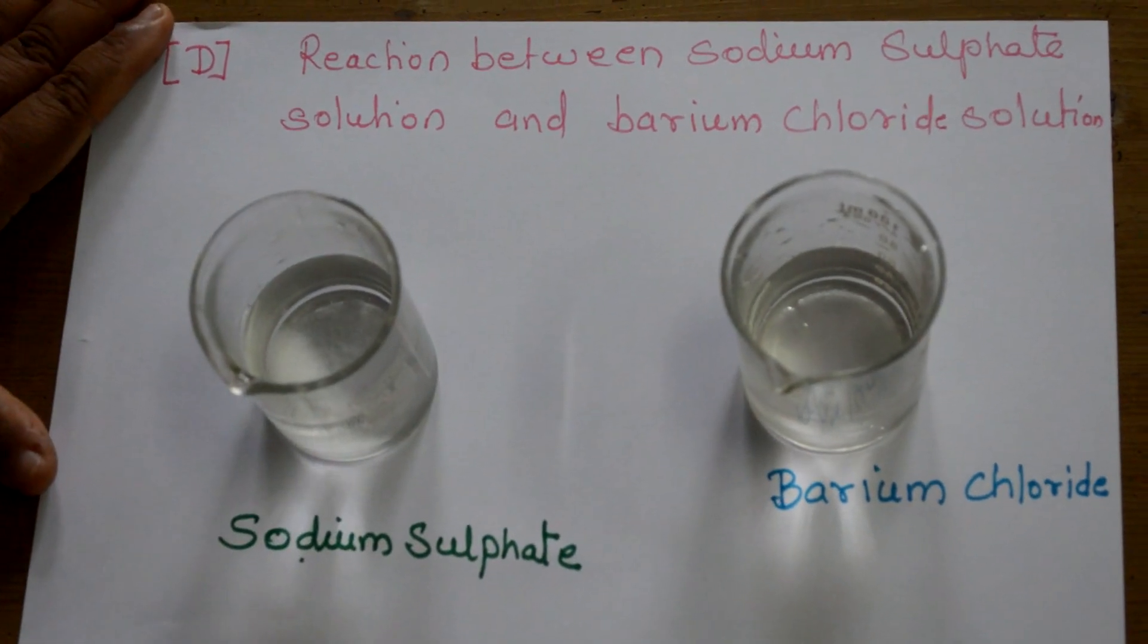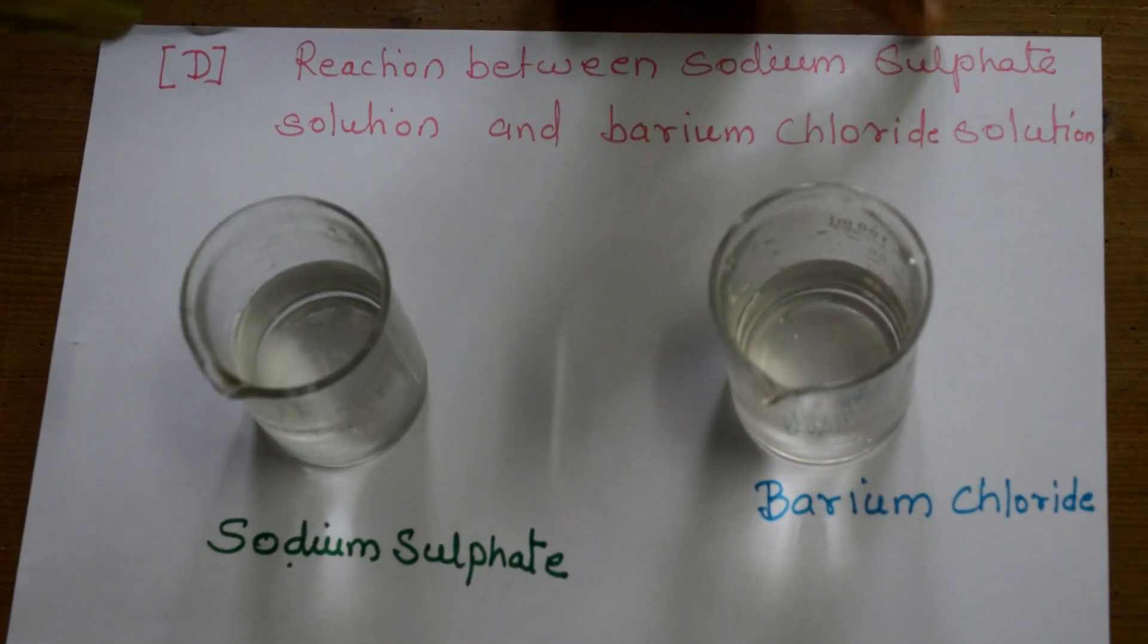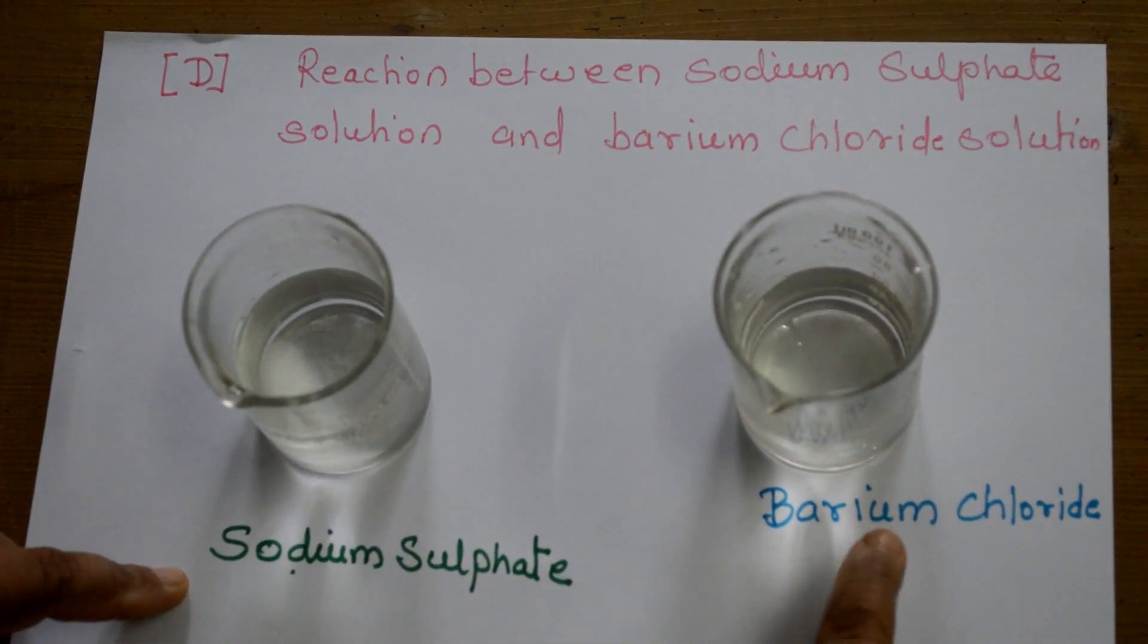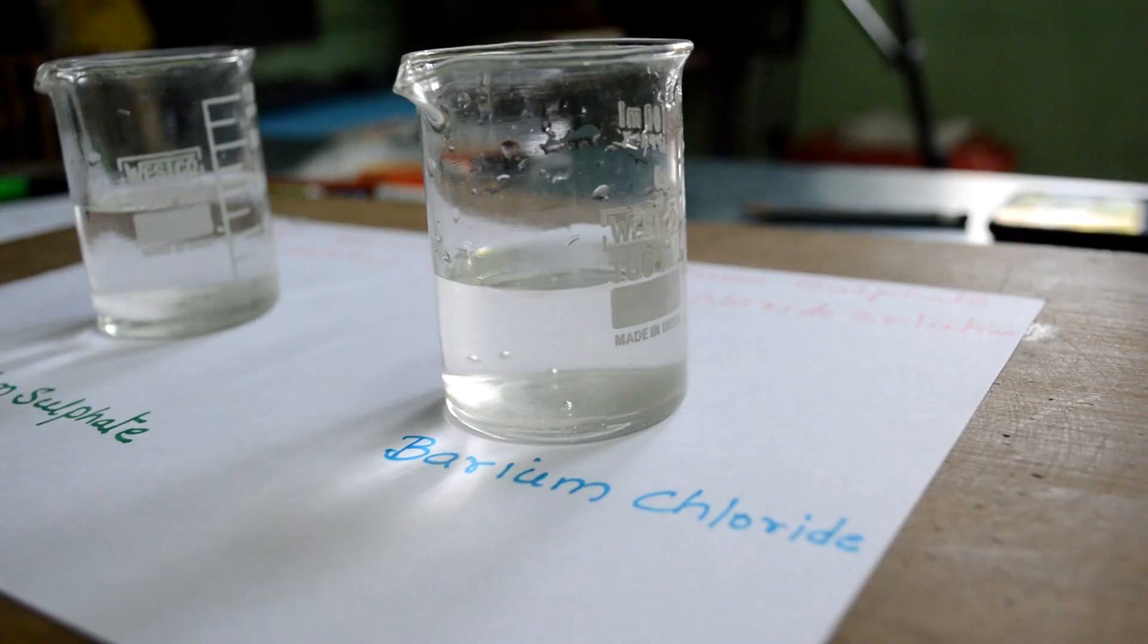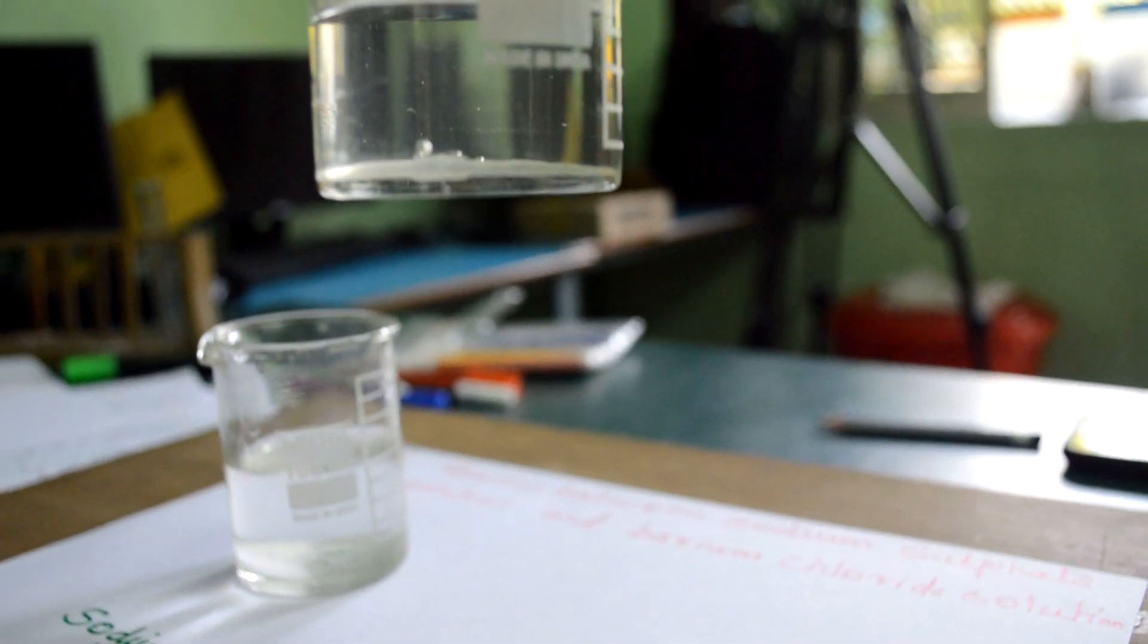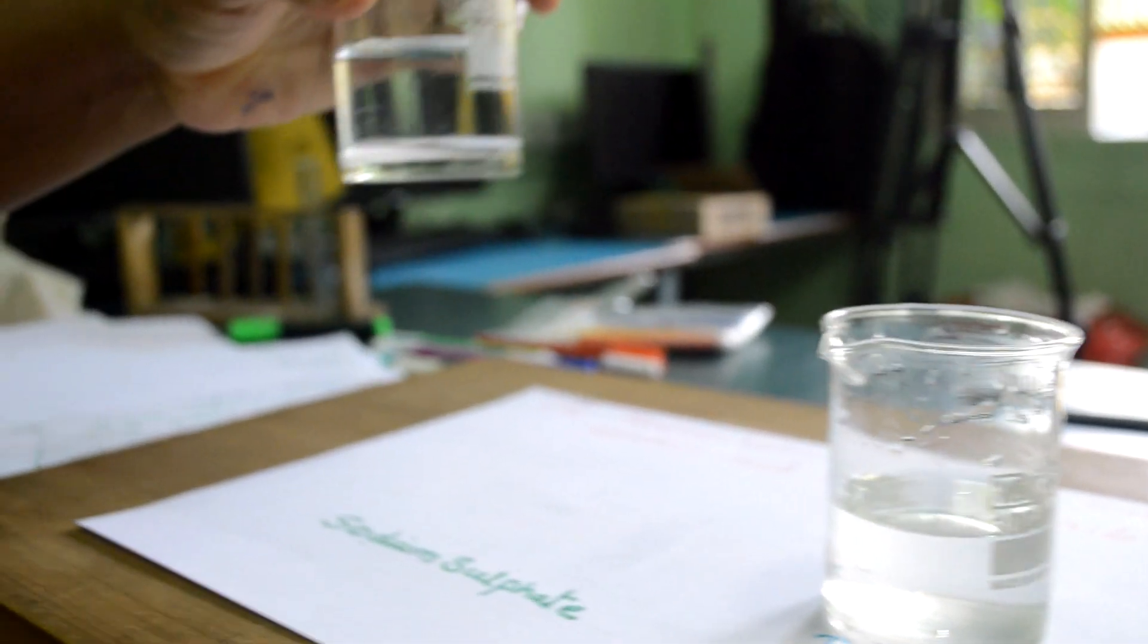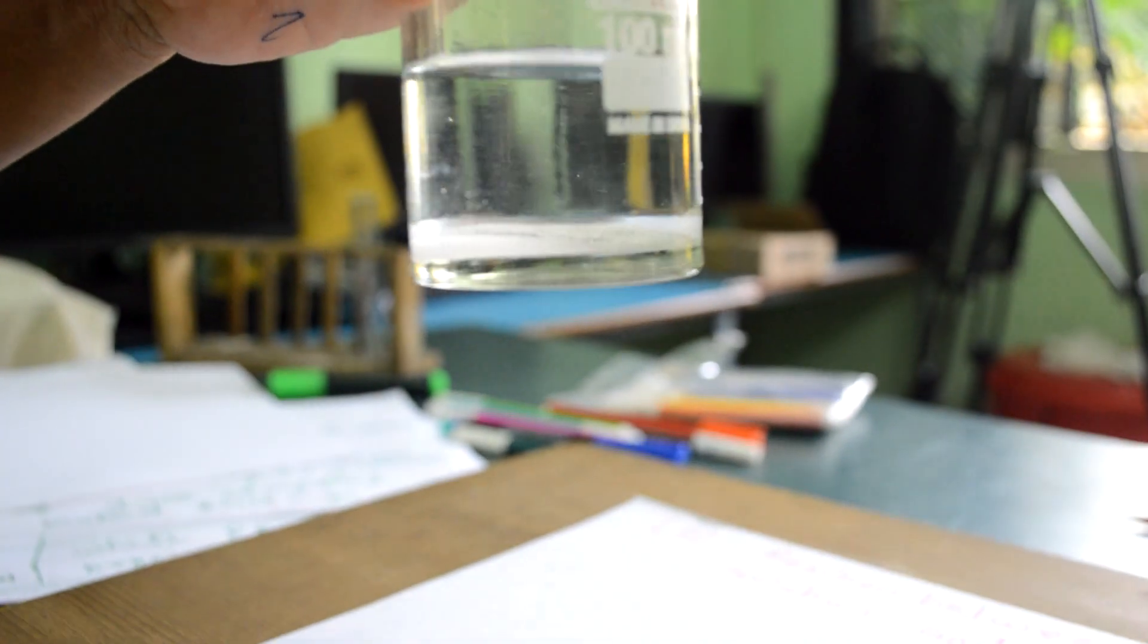Children, now we will be learning the reaction between sodium sulphate and barium chloride solution. You see, barium chloride solution is very clear and transparent. Same as sodium sulphate solution, it is also clear and transparent.